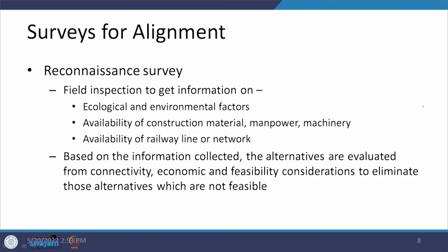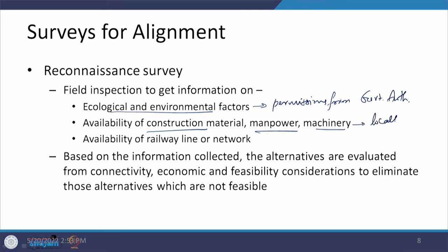Apart from what we have discussed, there is another important aspect to take care of — ecological and environmental factors — because this may result in different permissions which need to be acquired before construction starts. So permissions from government authorities will be required. Availability of construction material, manpower, and machinery also matters — if locally available, that is the best outcome, but if transported from another location, it adds to the cost.